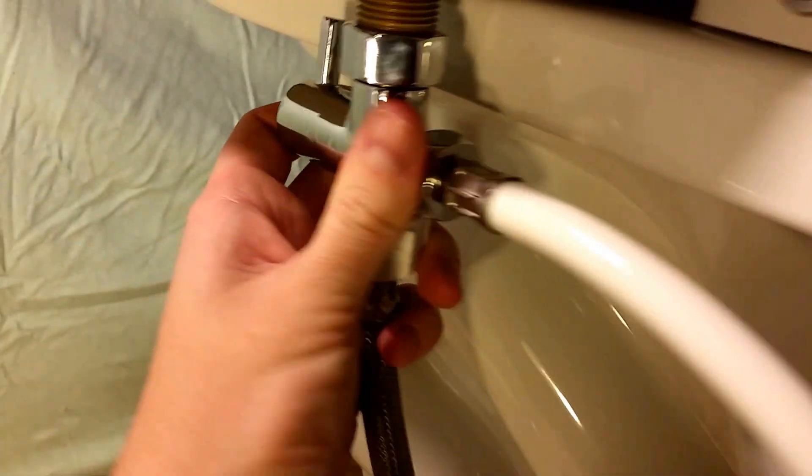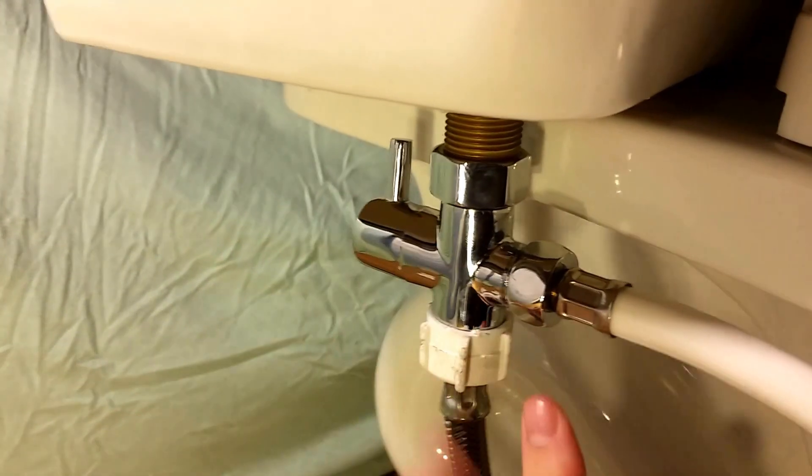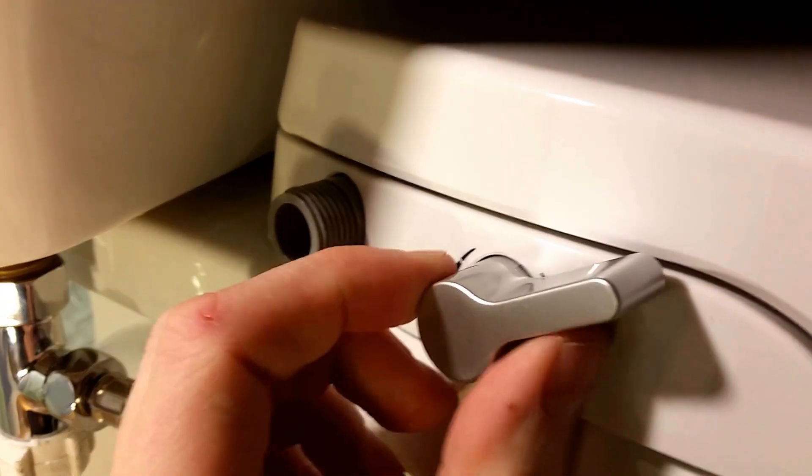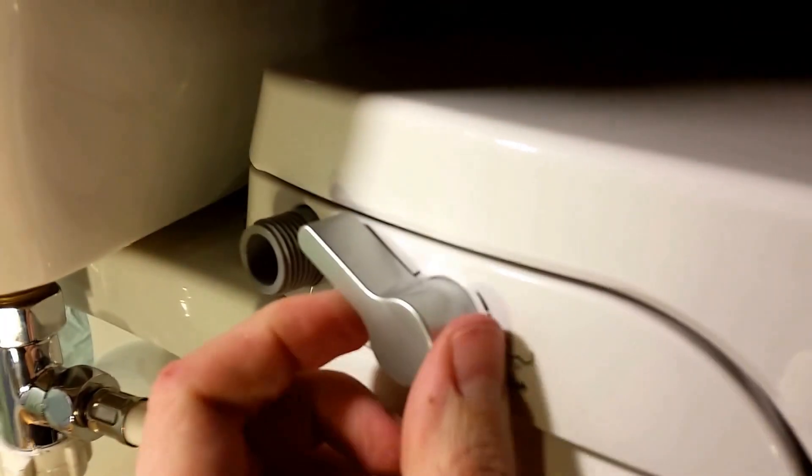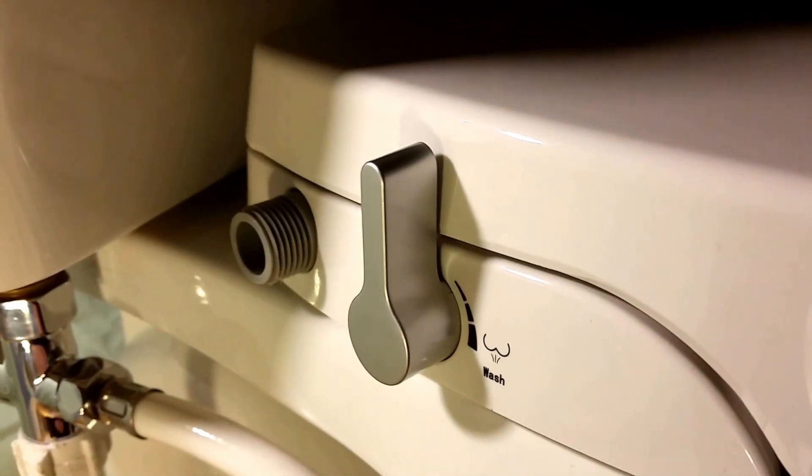And when you want to, once you've got your water turned back on, the T connector, this is off position, this is on position. Like I said, supplying water to the bidet itself. And then here is where you control how strong the flow of the bidet is. And there's two different settings for the bidet.